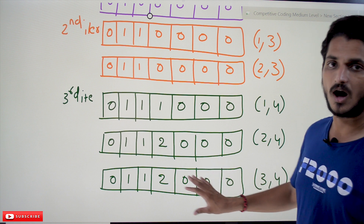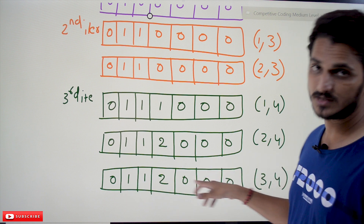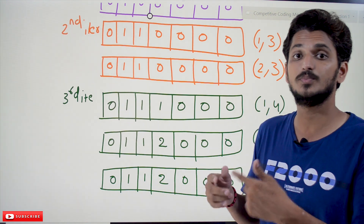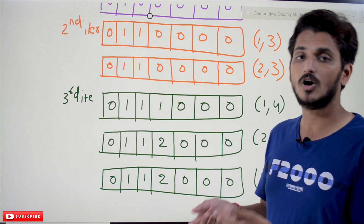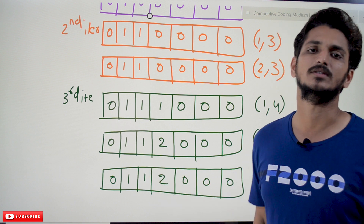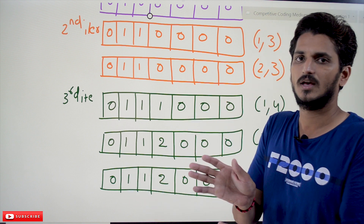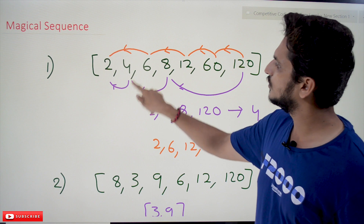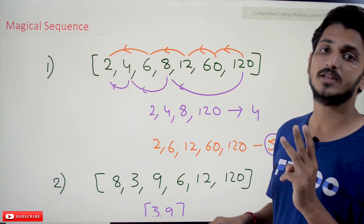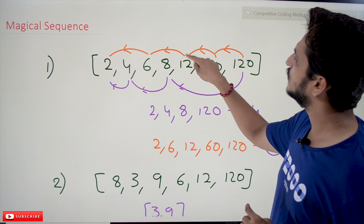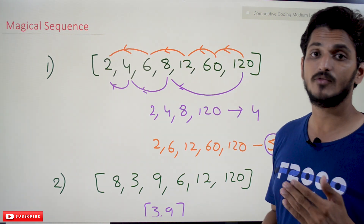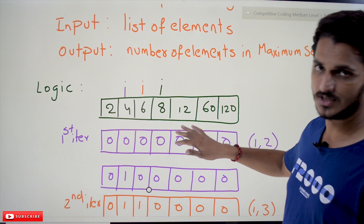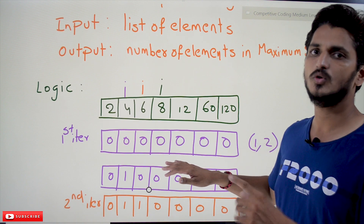This process continues and the count list keeps being updated. After all iterations, find the maximum value in the count list — that is the maximum number of divisions. Since we are counting divisions (not elements), add 1 to get the number of elements in the sequence. For example, 3 divisions means 4 elements; 4 divisions means 5 elements. So the final answer is max count plus 1.